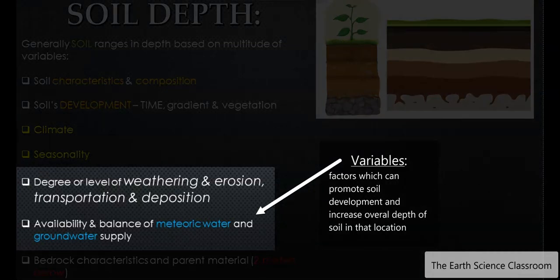So either groundwater supply moving through the soil, through the rock layers to a location to provide the adequate water supply for organic material and biotic components, and to create the leaching and percolation of nutrients down to deeper levels in the soil. Or you have meteorological water which comes from the atmosphere which falls as rain. And it's the balance between evaporation and rainfall which would dictate the depth and quality of the soil.